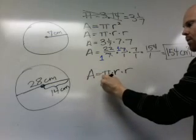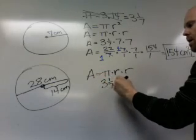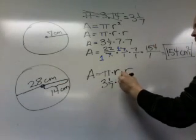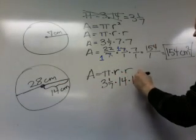Now we're going to replace pi with 3 and a seventh. And r is going to be replaced by 14, not 28. So we're going to get 14 and then we're going to get 14.